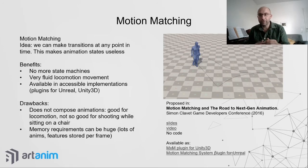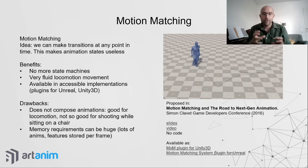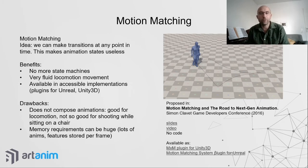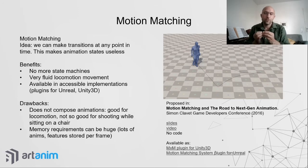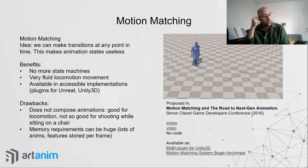The algorithm manages to find, for any current position and desired direction, the animation frame closest to the current pose. The result is very fluid locomotion, as the animations always transition from motion capture data to motion capture data. This has become very popular and is available as plugins for Unreal and Unity 3D, which are not very expensive.